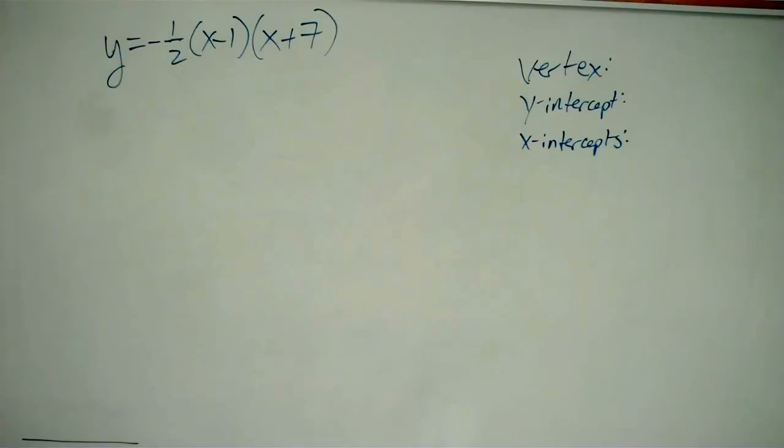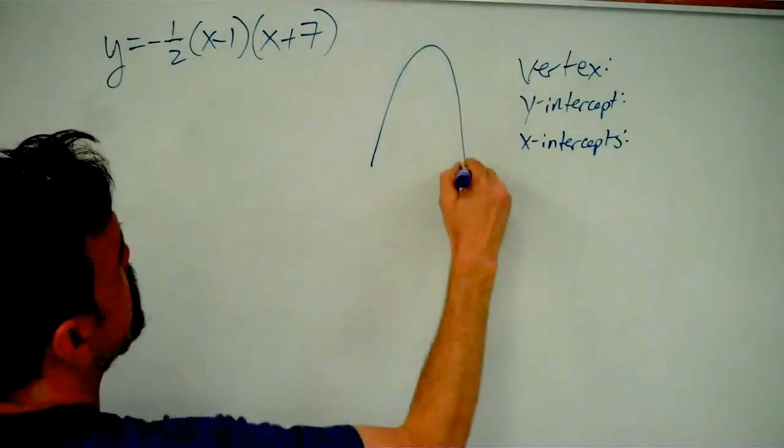So what do we have here? Well, one thing is really easy to find immediately, and that is my two x-intercepts. Let me make a quick sketch of this function, and it's going to look something like that.